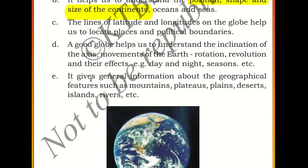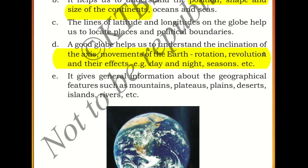A good globe also helps us understand the inclination of the axis, movements of the earth — rotation and revolution — their effects, day and night, and seasons. With the help of the globe it's easier to demonstrate how the earth moves and how it receives light from the sun, causing day and night and different seasons. With a good source of light, such as a torch, you can understand how day and night happen using a globe, or even using any spherical object like a ball.